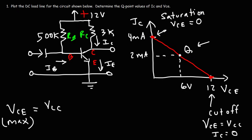In between these two regions is the active region of the transistor — that's where you want the transistor to be. Ideally right in the middle between the saturation region and the cutoff region, where VCE is half of VCC and IC is half of its maximum value.